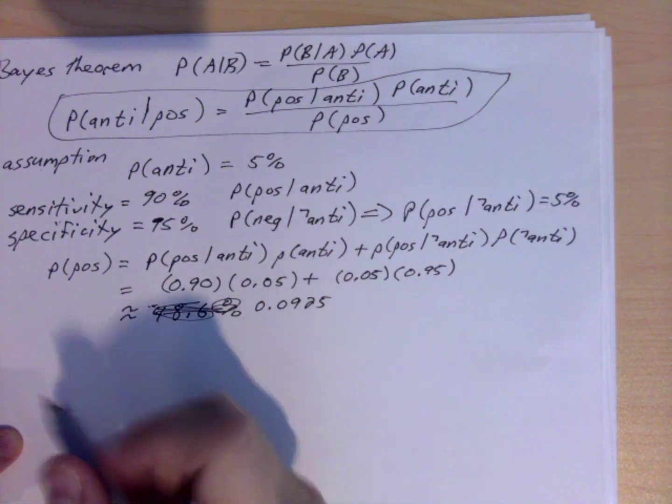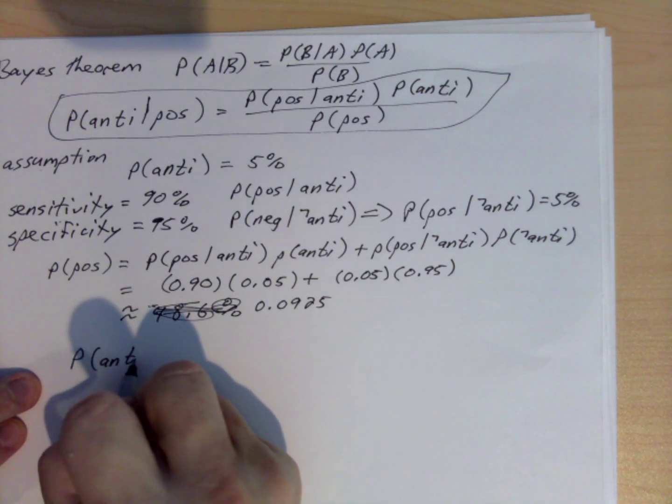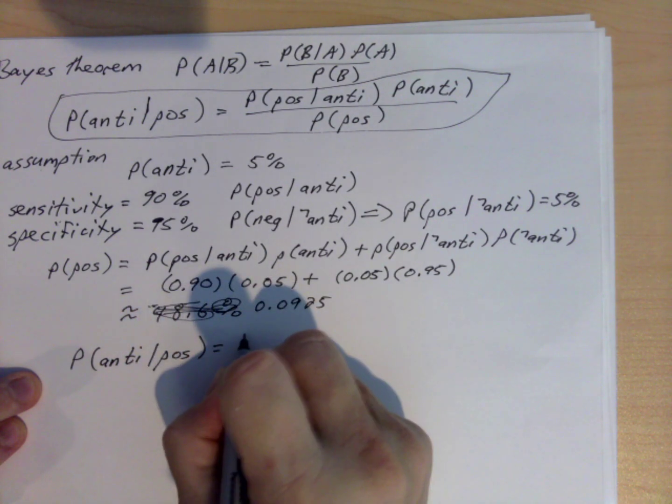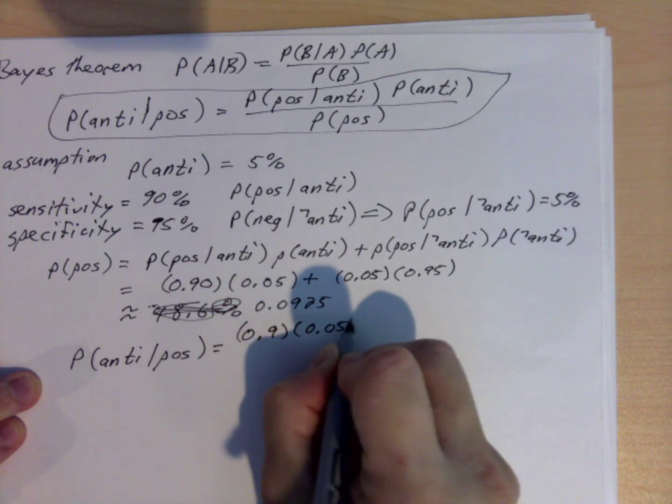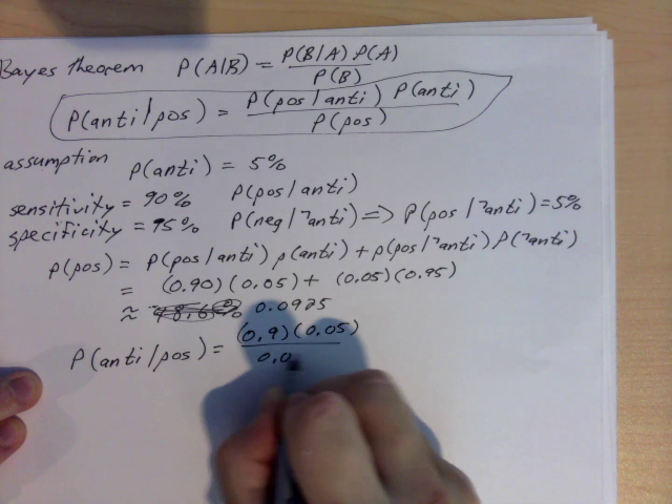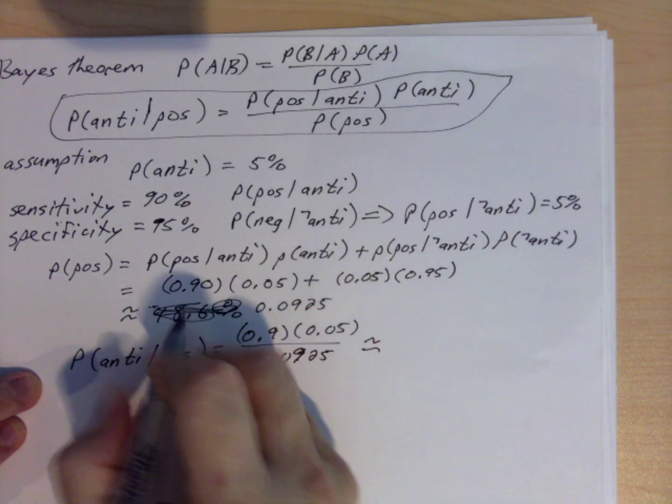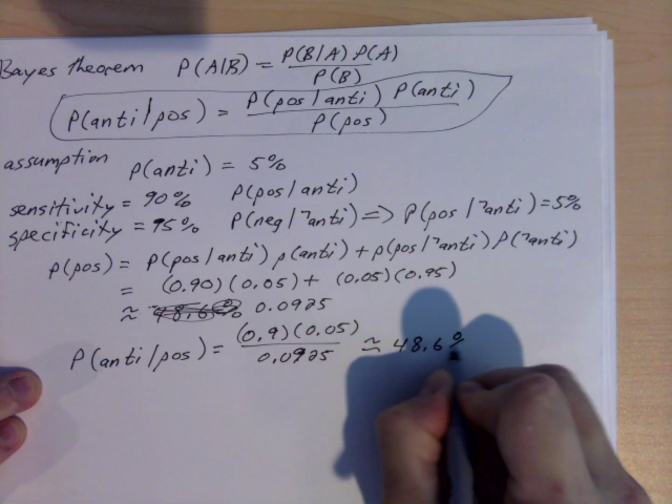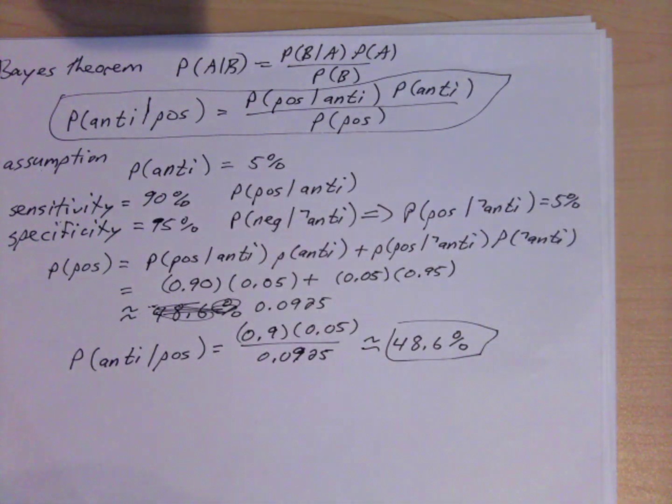So now when we put all the numbers together, the probability that you have antibodies given that you test positive for those is equal to 0.9 times 0.05 divided by 0.0925, that's a 9, which is approximately equal to 48.6%. And that's the answer that they've come up with.